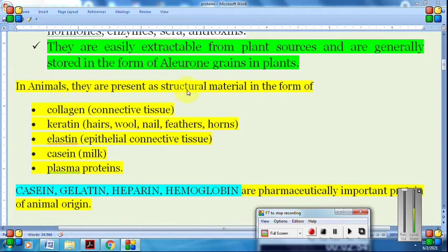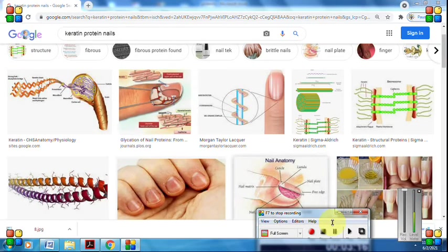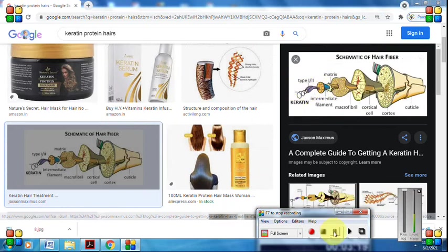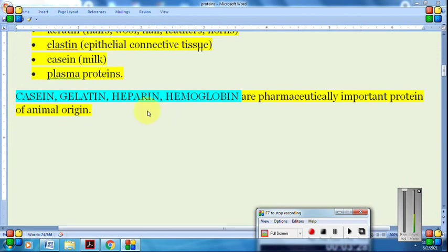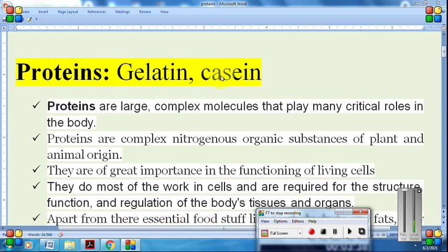Aleurone grains are protein bodies - specialized dry vacuoles where storage protein accumulates in stable form, usually in the endosperm. In animals, proteins are present as structural material in the form of collagen in connective tissue, keratin in hairs, wool, nails, feathers and horns, elastin in epithelial tissues, casein in milk products, and plasma proteins. Casein, gelatin, heparin, and hemoglobin are pharmaceutically important proteins of animal origin. In our syllabus, we have two proteins: gelatin and casein.